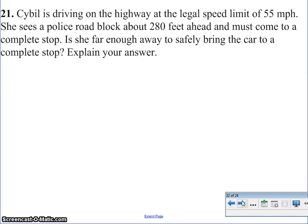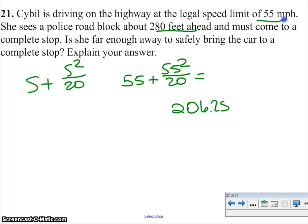All right. Sybil is driving on the highway at a legal speed limit of 55. She sees the police 280 feet ahead. She must come to a complete stop. Can she do it safely? So remember, it's speed plus speed squared divided by 20. So I'm looking at, she was going 55 miles an hour plus 55 squared divided by 20, and we find that she will be at 206.25, which means she will, yes, she will have enough room to stop.